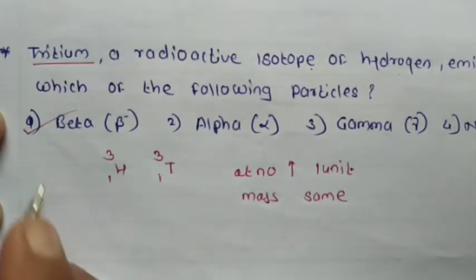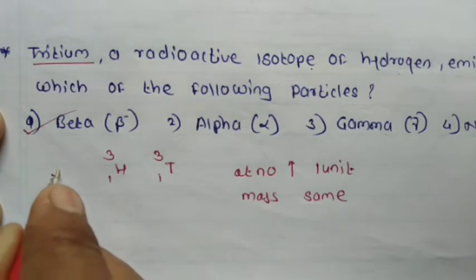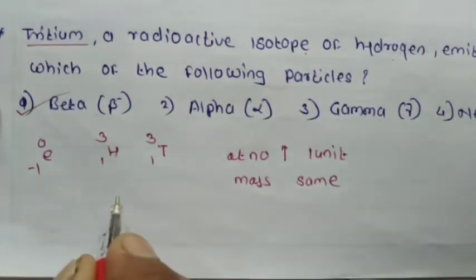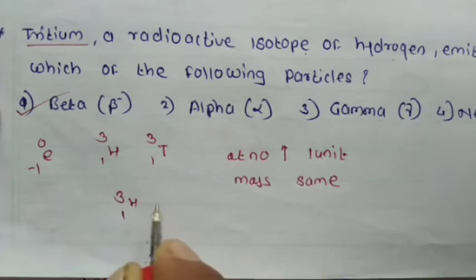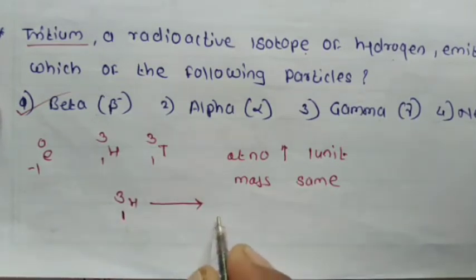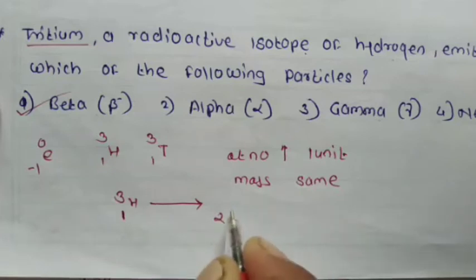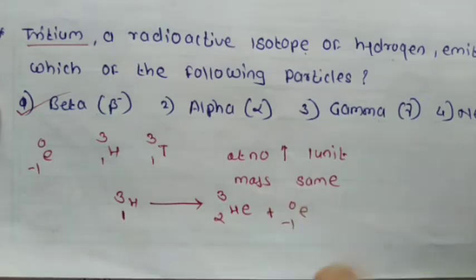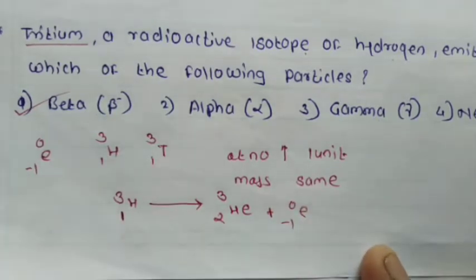The beta particle is denoted by ⁰e₋₁. When tritium emits a beta particle, the atomic number increases by 1, forming helium-3 (He with mass number 3), while mass number remains the same. So tritium emits a beta particle.